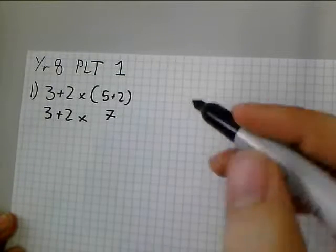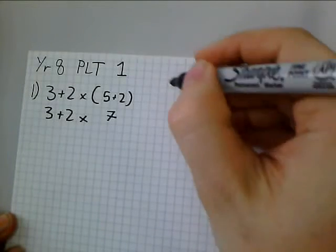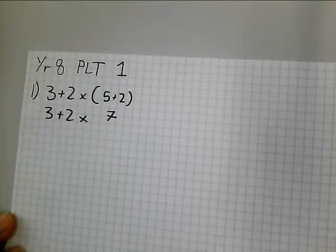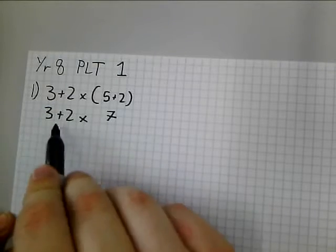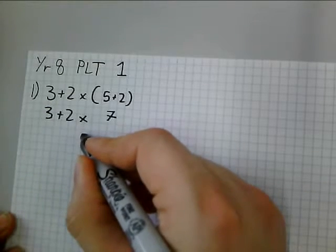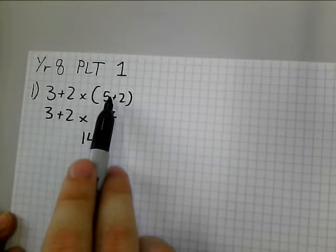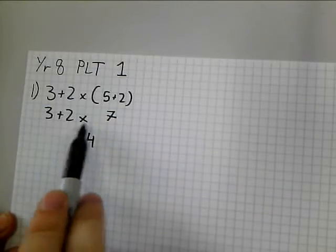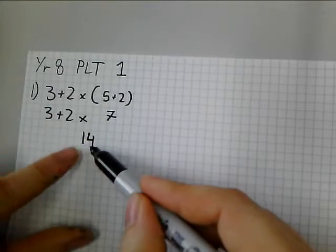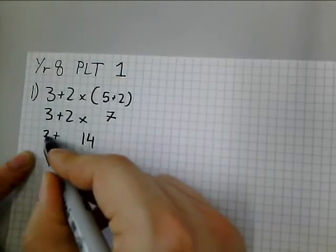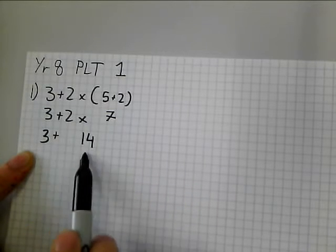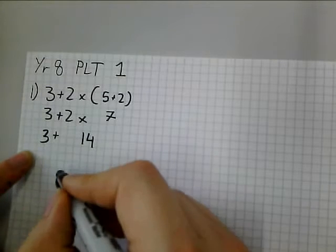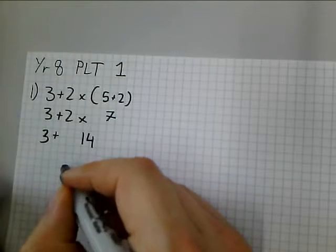I'm then going to, once I've done my brackets, there are no indices to look at, there were no powers. I'm going to look at any multiplication and division, and remember those can be done in either order. Now I've got a multiplication sum here, 2 times 7. So this now needs to be evaluated to 7 times 2, 14. Now notice how I put my evaluation underneath where it was before, almost like a pyramid shape. And I'm going to bring down the sum that I haven't done yet. So I haven't done this 3 plus yet, but I've evaluated 2 times 7 to give me 14. So I'm now at the 3 plus 14, and that finally leaves me with 17.